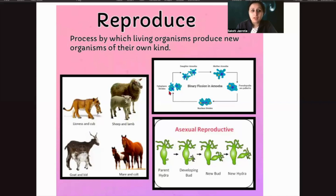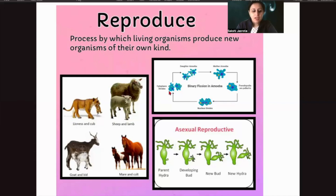Yeast, which is used in baking and cakes, is a very microscopic organism. Under favorable conditions, it starts multiplying. Reproduction is also not shown by non-living organisms — if you leave a chair for six months, it will not multiply into another one. So reproduction is a characteristic shown only by living organisms.